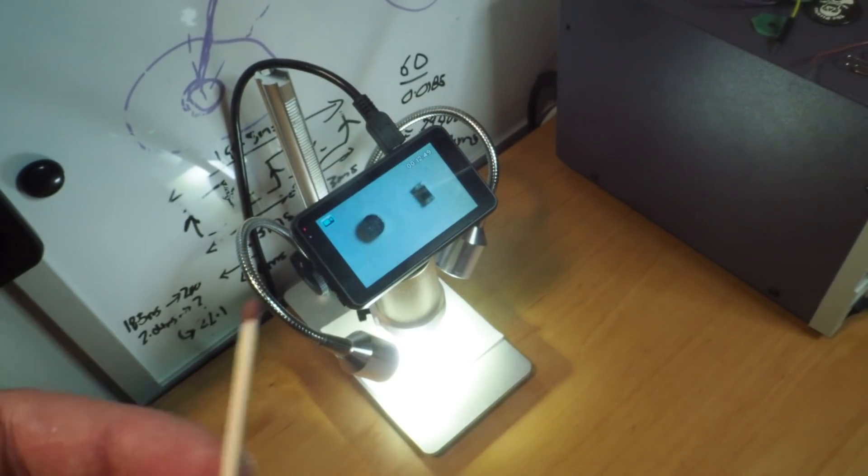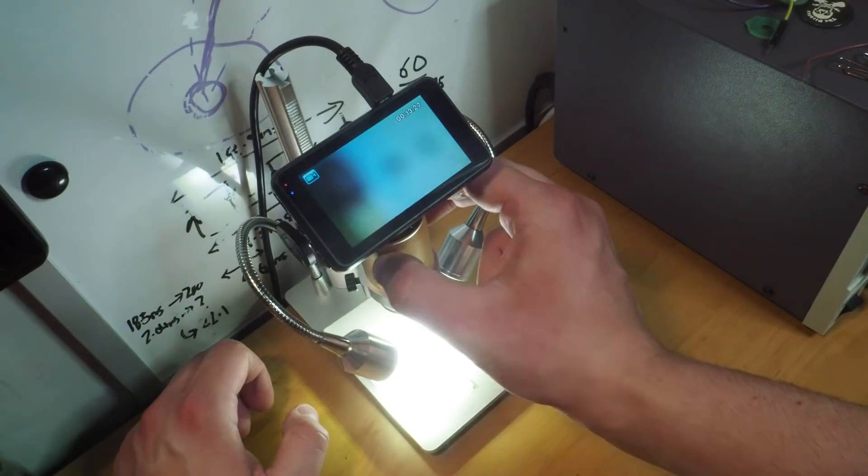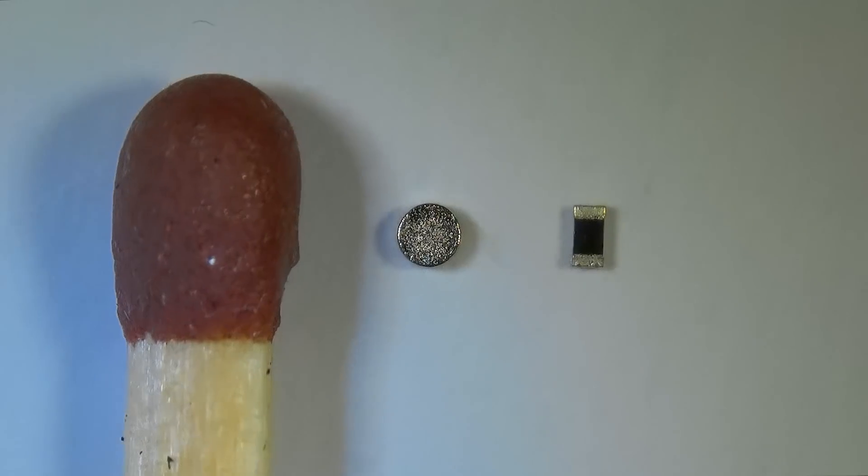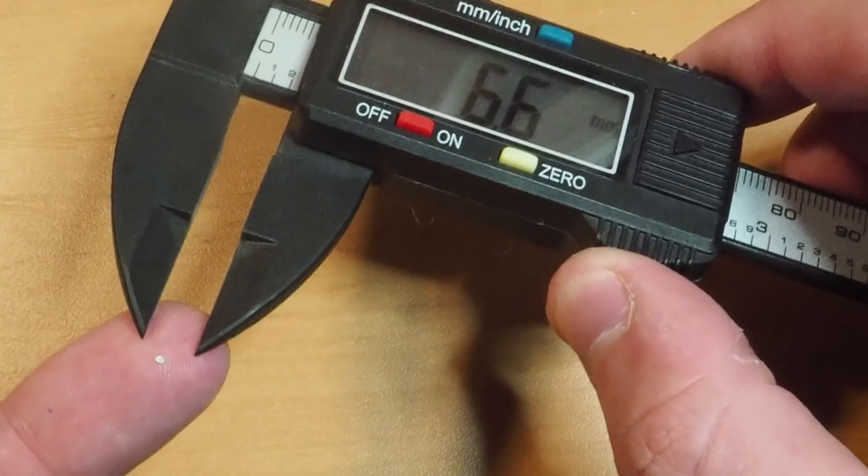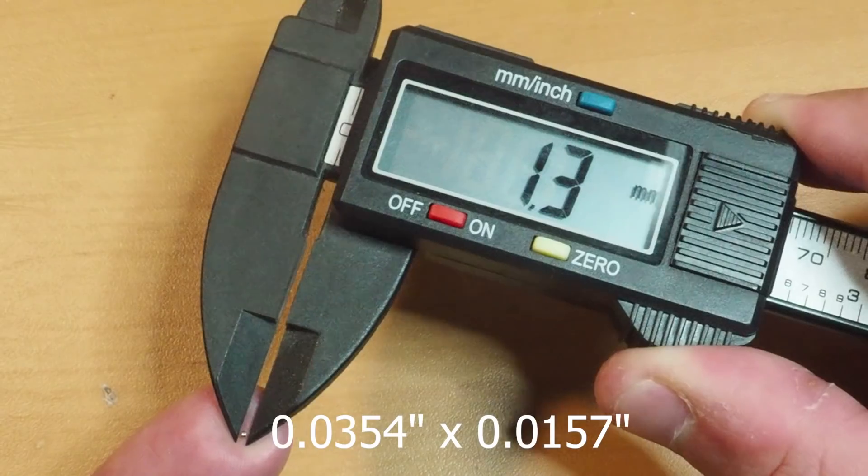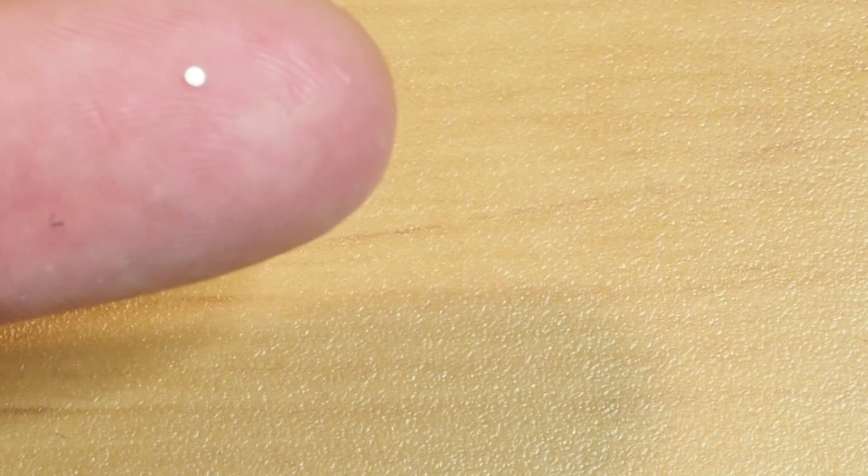If we measure the actual size of the magnet, it's around one millimeter by 0.5 millimeter. So even though the material is rated at N52, the magnetic flux density is still very weak because of the tiny area.